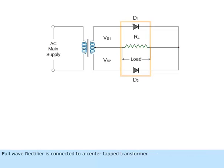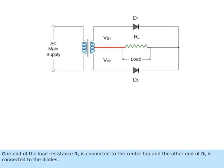The full wave rectifier is connected to a center-tapped transformer. The secondary voltage is divided equally into two halves. One end of the load resistance RL is connected to the center tap, and the other end of RL is connected to the diodes.